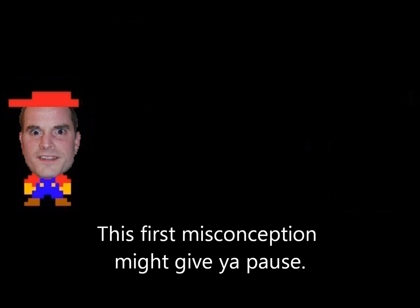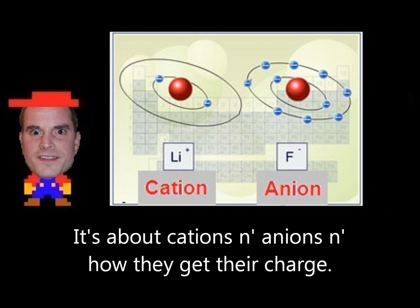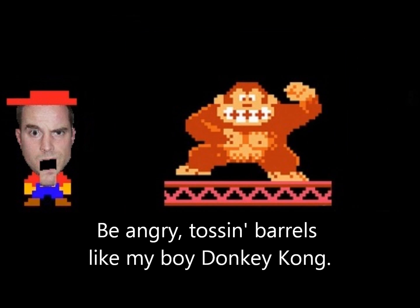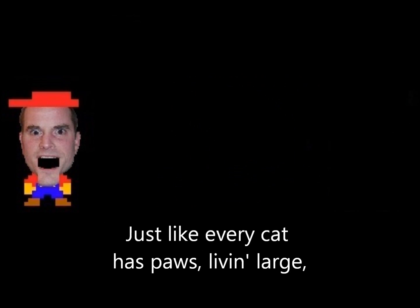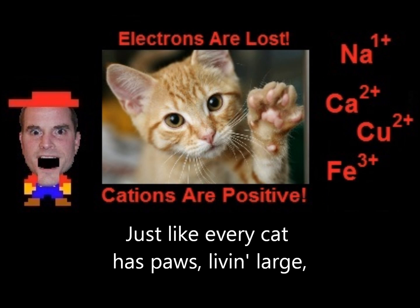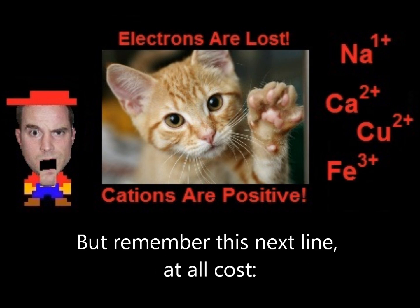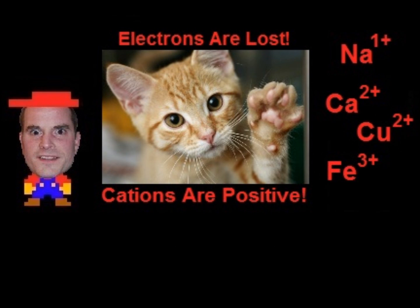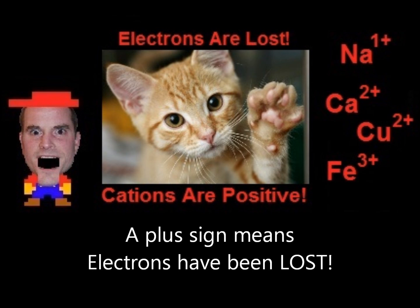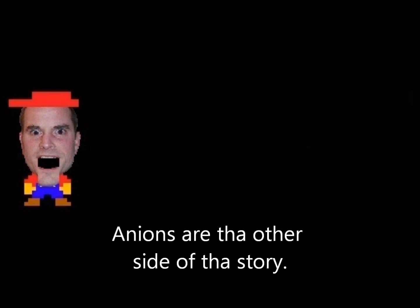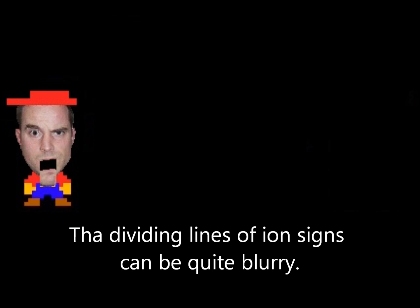This first misconception might give you pause — it's about cations and anions, how they get their charge. Study it hard or you're lost. Get it wrong and be angry, tossing barrels like Donkey Kong. Just like every cat has paws living large, all cations have a positive charge. Remember this next line at all cost: a plus sign means electrons have been lost.